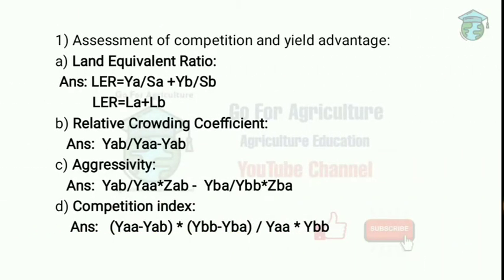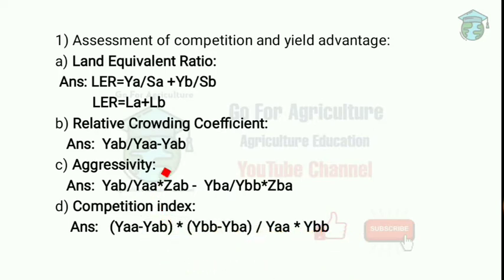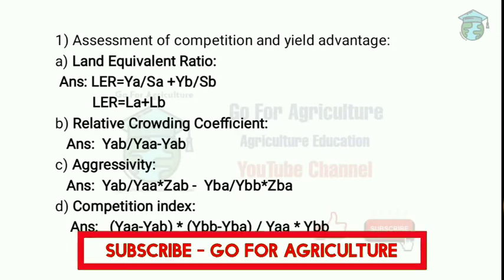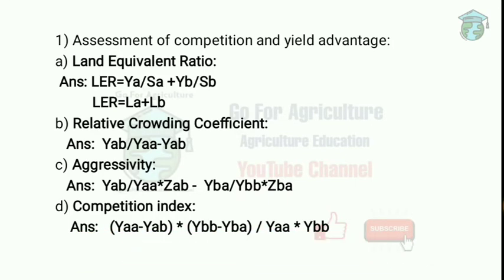First is the assessment of competition and yield advantage. The Land Equivalent Ratio (LER) equals YA divided by SA plus YB divided by SB. YA and YB are the yields of individual crops A and B in mixture, and SA and SB are yields of crops A and B in pure stand. If LER is more than one, the mixture gives a 10% yield advantage.